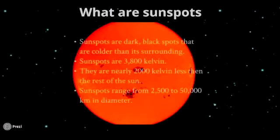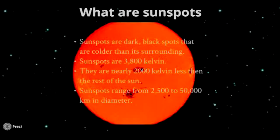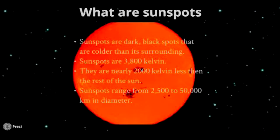First, what are sunspots? Sunspots are dark black spots that are cooler than their surroundings, and they also represent where the magnetic field is coming out from. Sunspots are 3,800 degrees Kelvin.